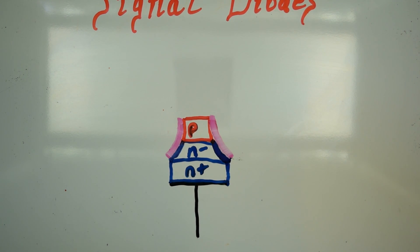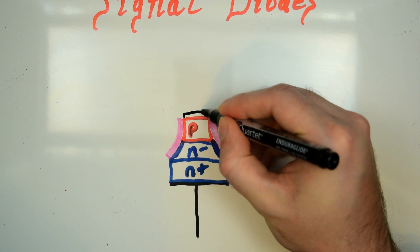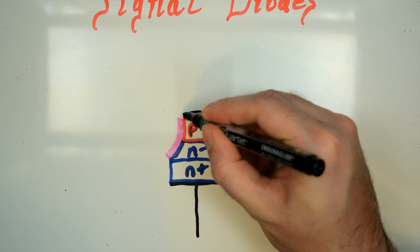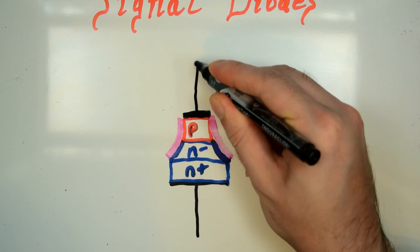And then they'll have, I guess I'll use black for this, your standard little junction plate here onto the p-type material, and that's going to come up into the anode.